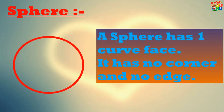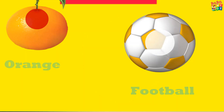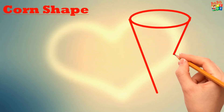Next shape is sphere. This is a sphere shape. A sphere has one curved face. It has no corner and no edge. An orange and a football are sphere shapes.